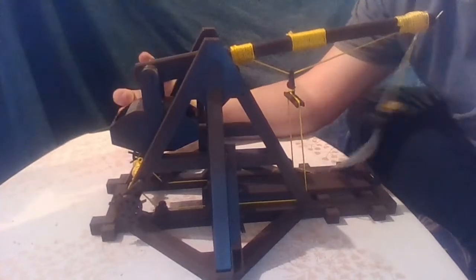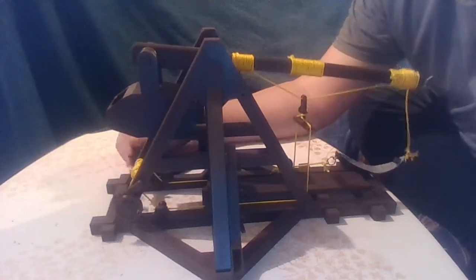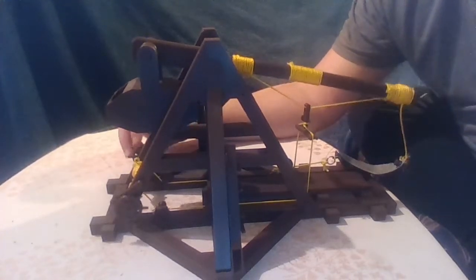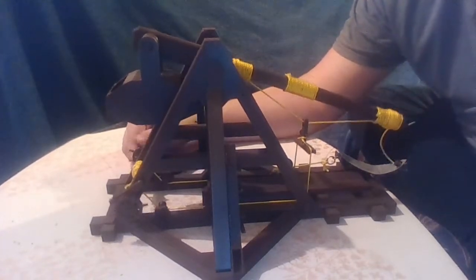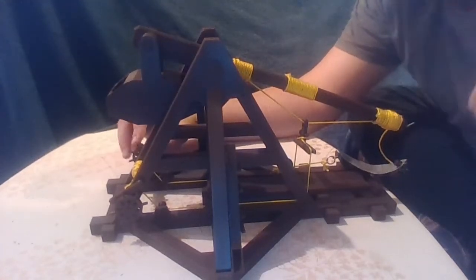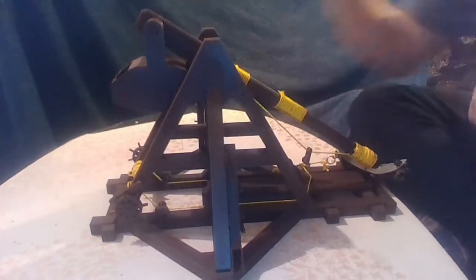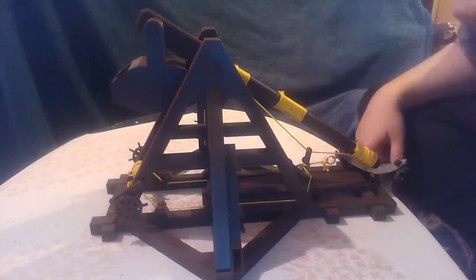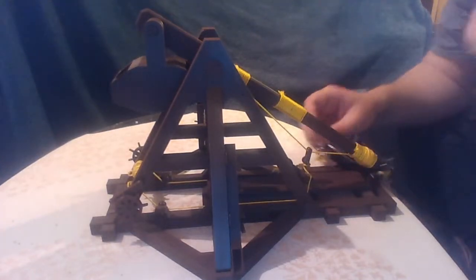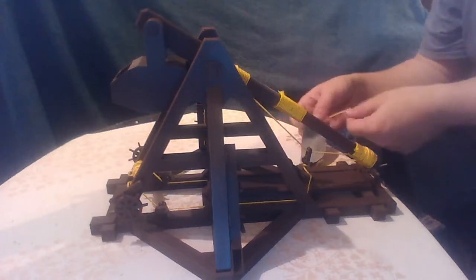And now we can pull everything down once again. The counterweight itself is around 400g, so almost half a kilo. Well, between 3 and 4. And that's it for the trebuchet actually.